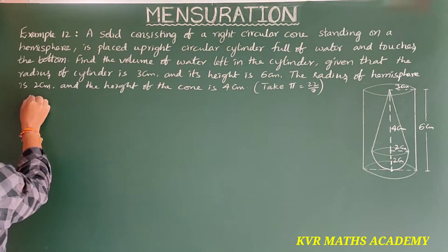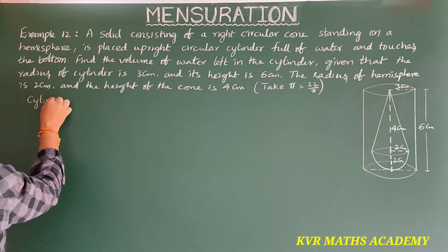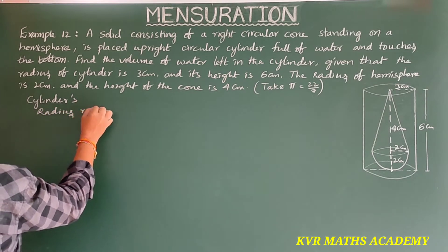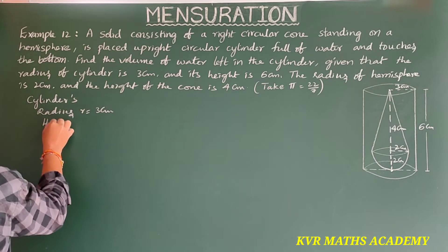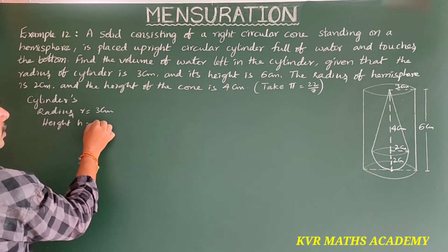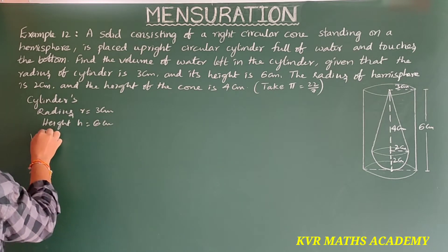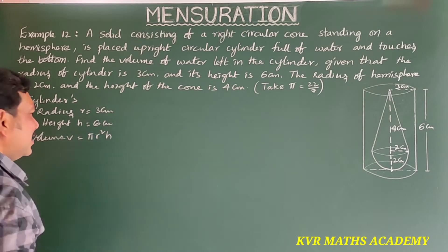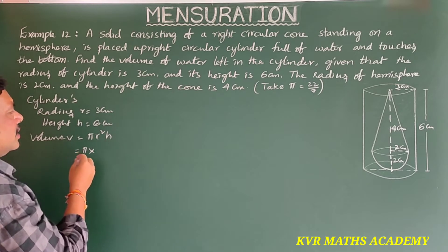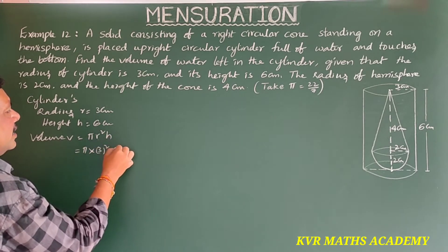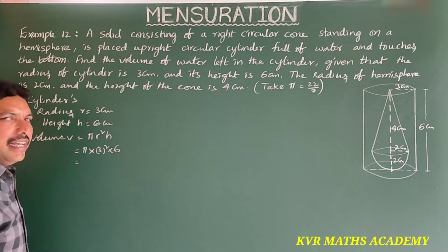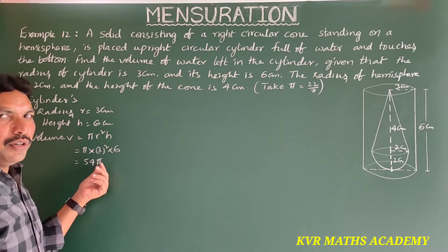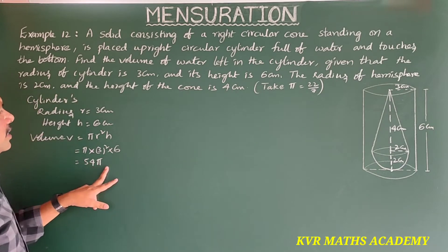First, for the cylinder: radius R is equal to 3 cm, height H is equal to 6 cm. Its volume V is equal to pi R squared H, that is pi into 3 squared into 6. 3 squared is 9, into 6 is 54. So volume of cylinder is 54 pi centimetre cube.